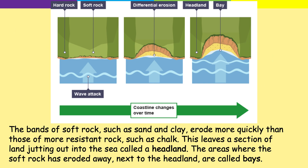This is how headlands and bays form. The bands of soft rock, such as sand and clay, erode more quickly than those of more resistant rock, such as chalk. This leaves a section of land jutting out into the sea, called a headland. The area where the soft rock has eroded away, next to the headland, is called a bay. As we go over time, the softer rock — the middle portion, the lighter green — is being eroded quicker through differential erosion. So you can see the bay starting to form and getting wider. The two areas of land either side that stick out are called the headland.